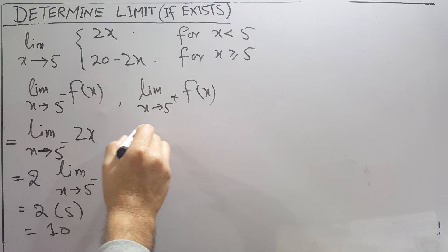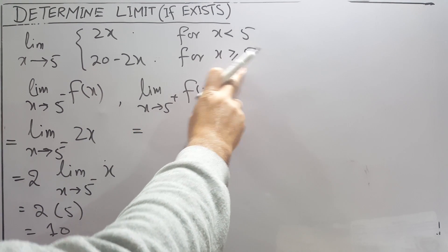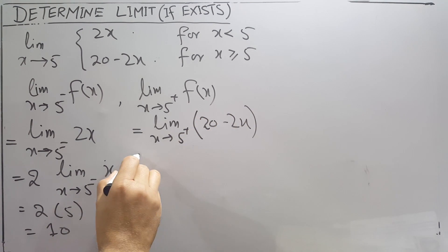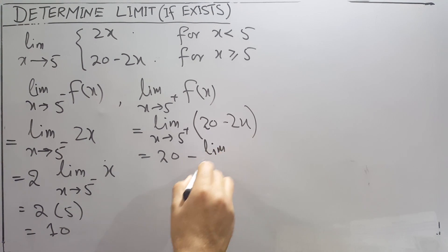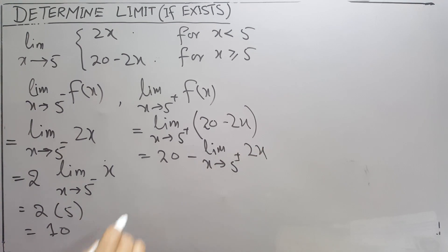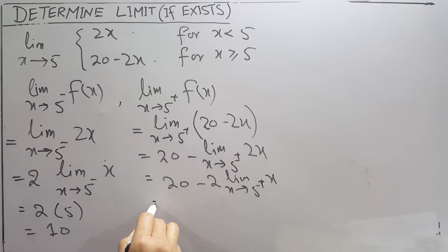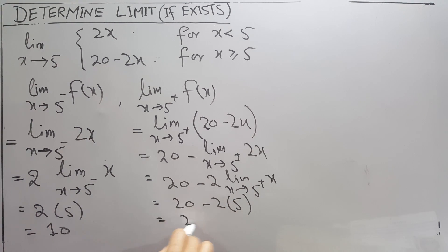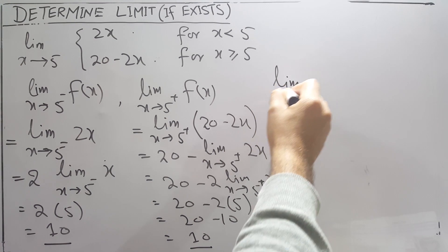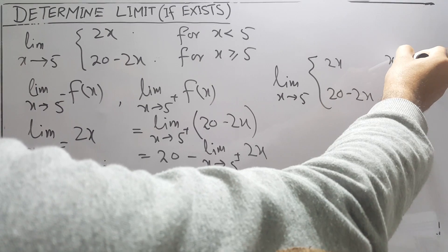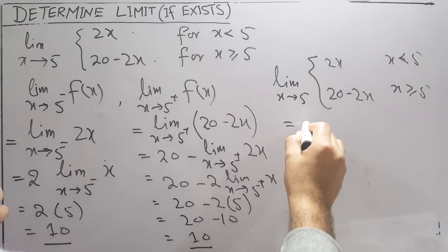For the right-hand limit, since x is 5 or greater, we use 20 - 2x. The constant 20 stays as is; for 2x we take 2 out and apply the limit to get 2 times 5 = 10. So 20 - 10 = 10. Since the left-hand limit and right-hand limit are both 10, the limit as x approaches 5 equals 10.